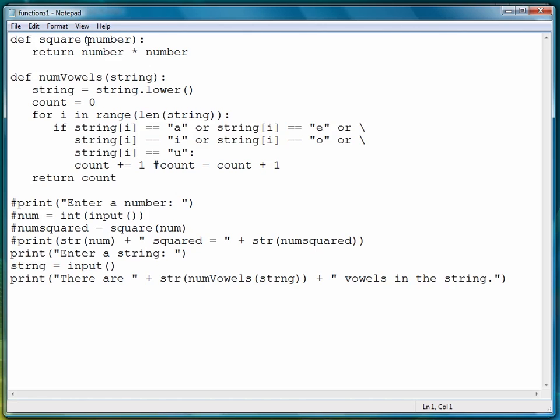We're ready to move on now to the next lesson where we're going to look at function definitions that have multiple parameters. Both of the function definitions we've seen so far, square and num vowels, have had one parameter. Number for square and string for num vowels. But function definitions can have multiple parameters. In the next lesson we're going to see how to do that.